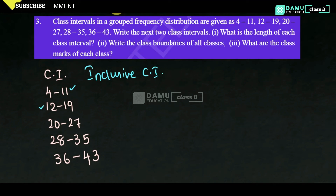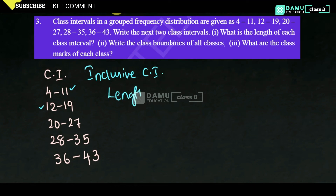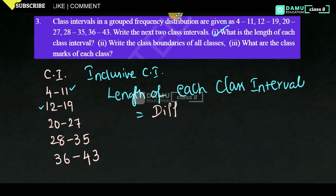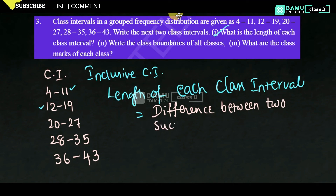Next, we need to find the length of each class interval. The formula is: the difference between two successive class limits — that is, take the difference between two successive lower limits or upper limits.